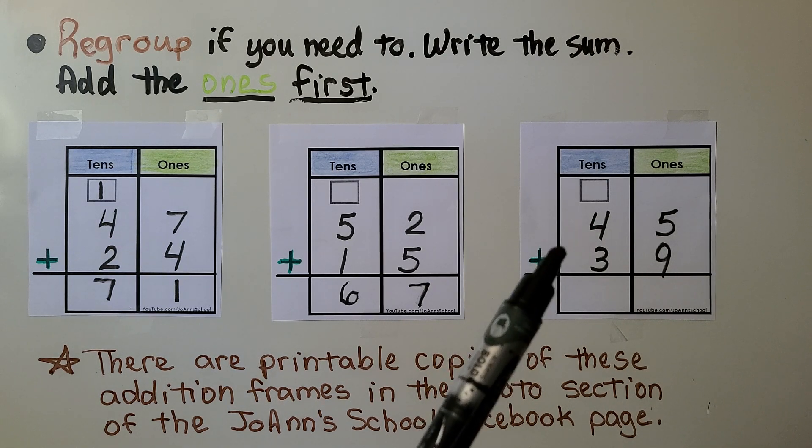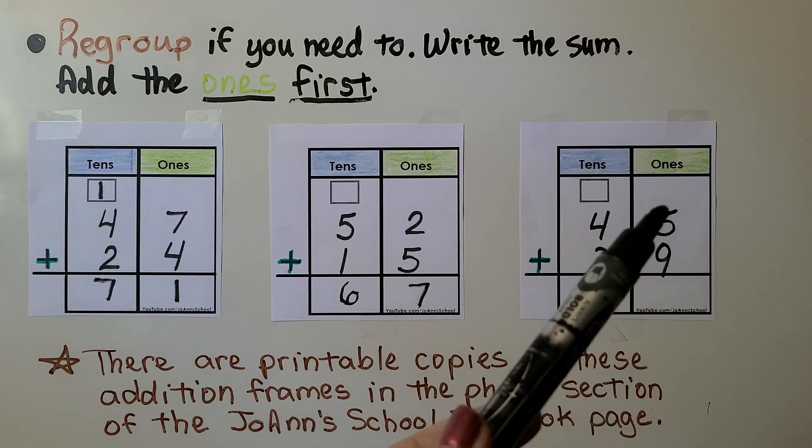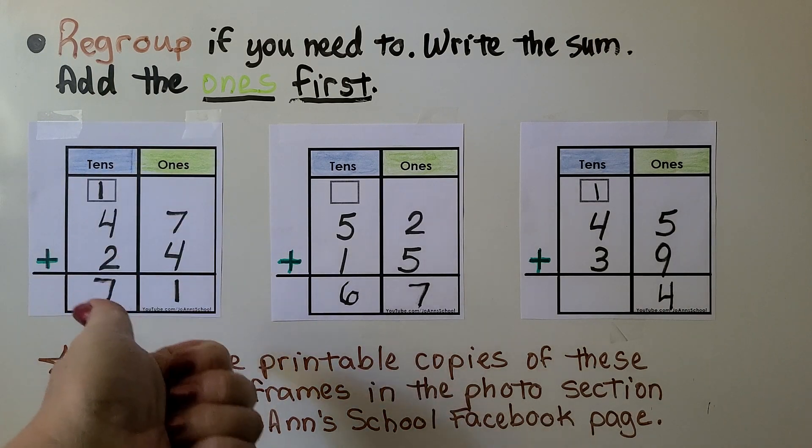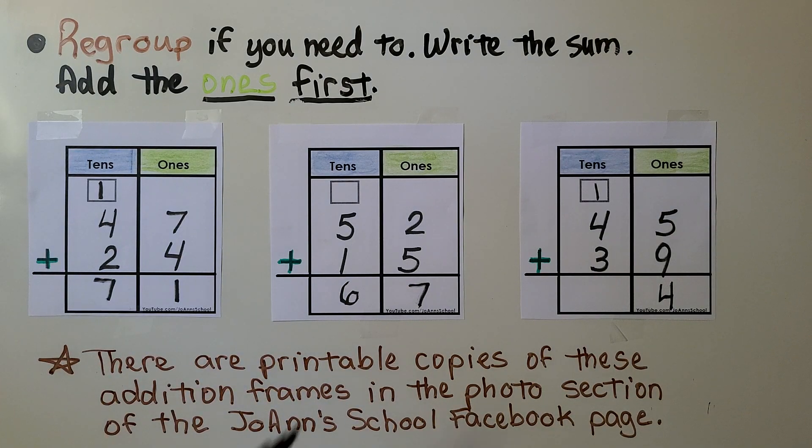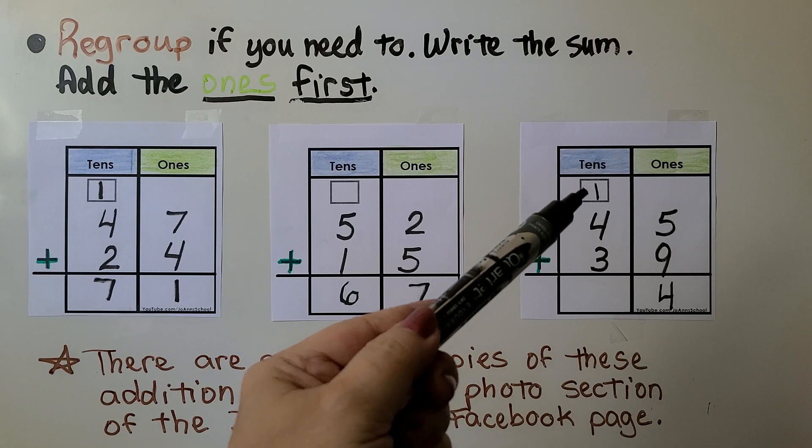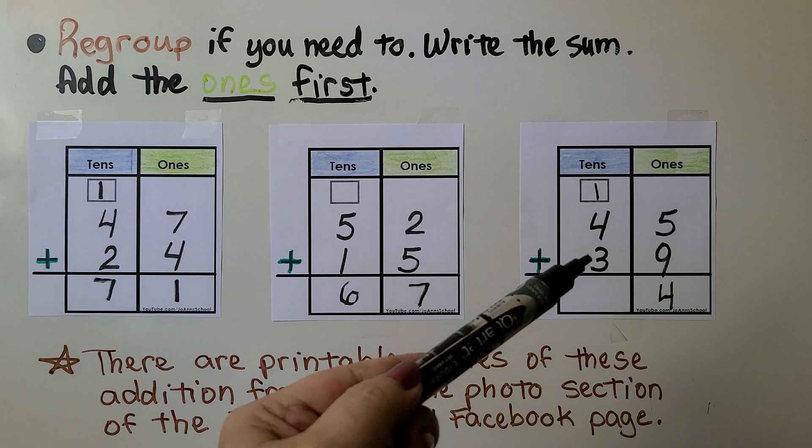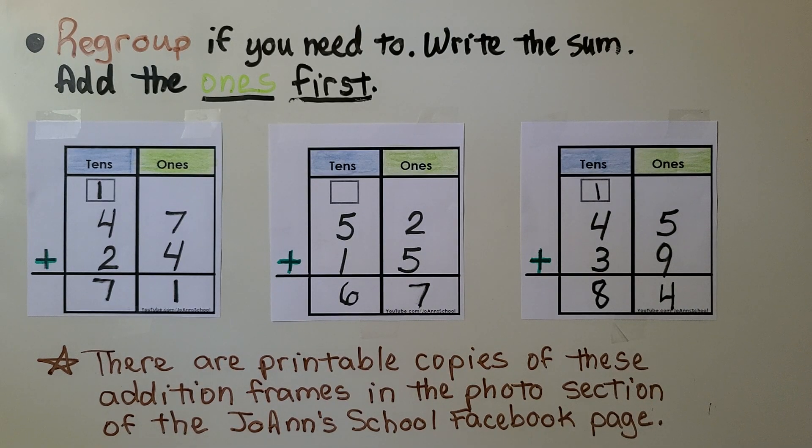Here we have 45 plus 39. We start by adding the ones. 9 plus 5 more is 14. We have 9, 10, 11, 12, 13, 14. 14 is 1 10, 4 ones. We regroup the ten to the tens column. Now we add all the tens. 4 plus 3 is 7. 7 plus 1 more is 8. 45 plus 39 is equal to 84.